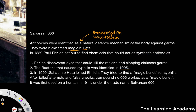In 1909, Sahachiro Hata joined Paul Ehrlich and they tried to find a magic bullet for syphilis. After what were seen as failed attempts and false checks, a compound called 606 worked as a magic bullet. It was used on the first human in 1911 under the trade name Salvarsan 606.